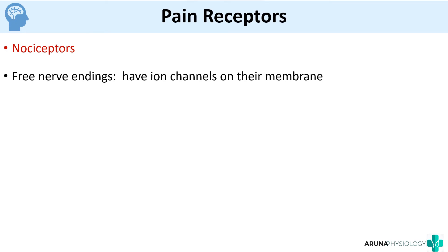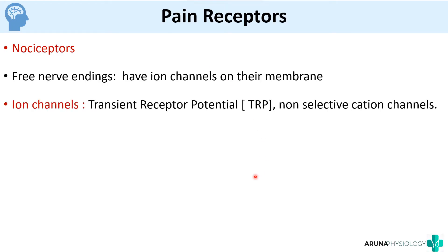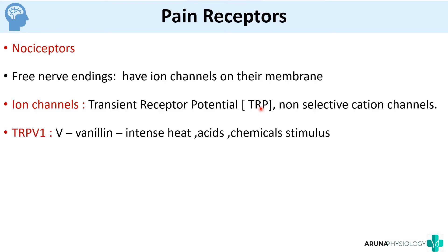Nociceptors are mainly free nerve endings. Free nerve endings have ion channels on their membrane called transient receptor potential channels, or TRP channels. They are basically non-selective cation channels. There are many types of TRP channels. One is TRPV1, where V stands for vanilloid, responsible for detecting intense heat, acid pain, and chemical stimuli like bradykinin.